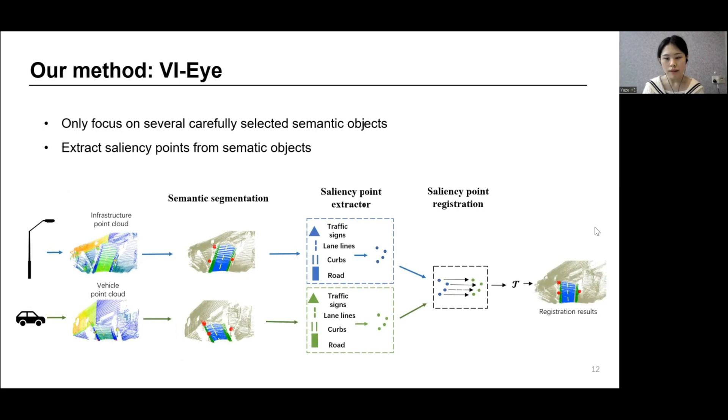A key advantage of our approach is to allow vehicles and infrastructures to extract the semantic information from their point clouds independently, which reduces the compute overhead of vehicles. Next, I will introduce each module separately.